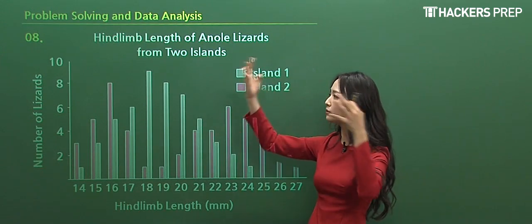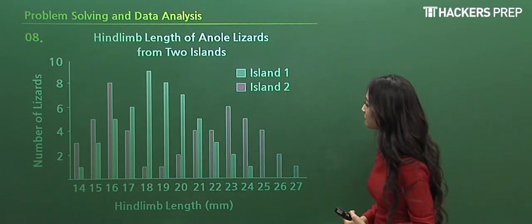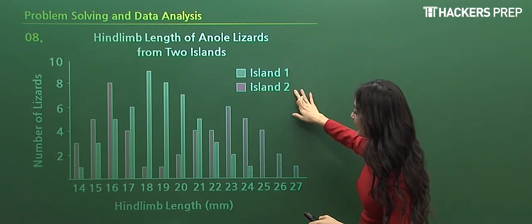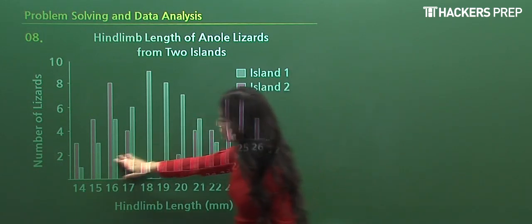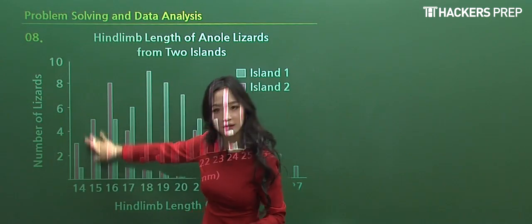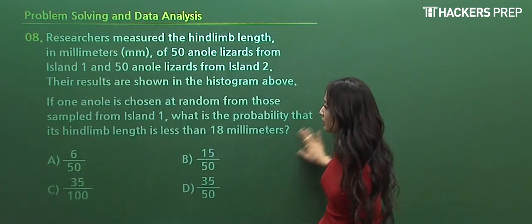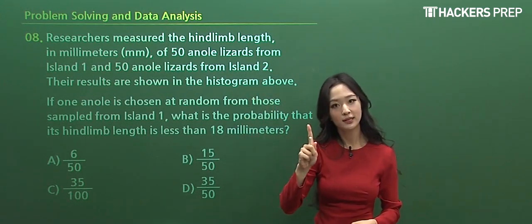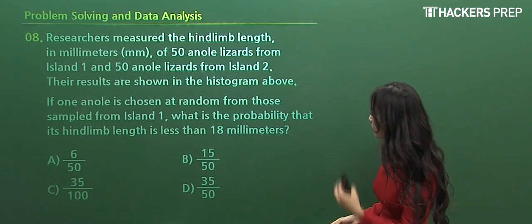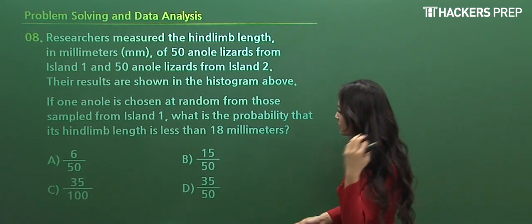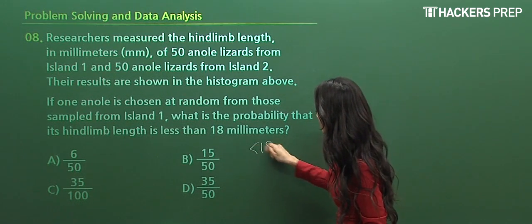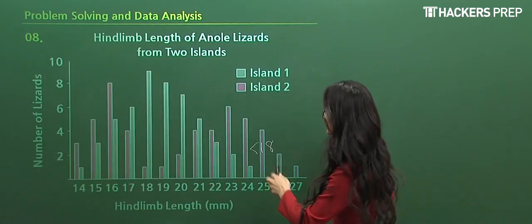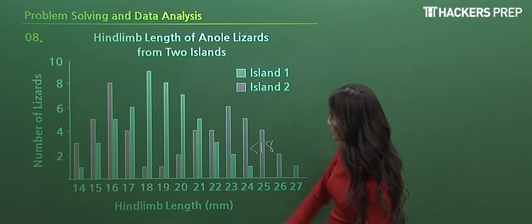So the title states some lizard values for island 1 and island 2, and notice how they're represented in the opposite direction. Two is given first and then one. And what are they asking for? The last part: if we choose one lizard randomly, what is the probability that its length is less than 18 millimeters from which island, the first island.